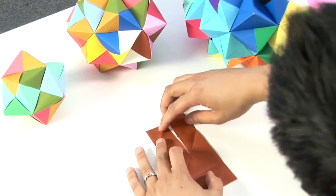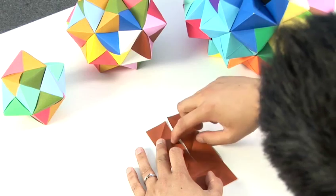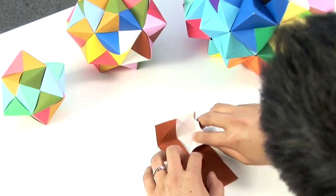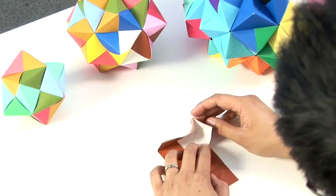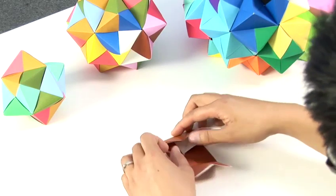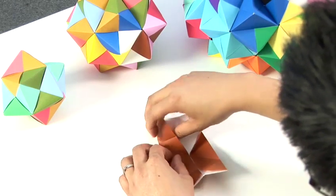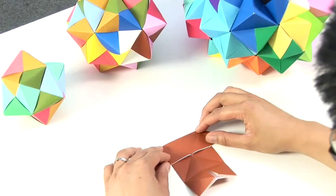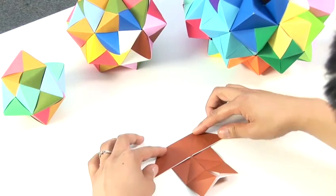We're going to repeat on this side as well. So again, it's that triangle. We're lifting it out and then pushing it back in. So you will form like a roof of a house.